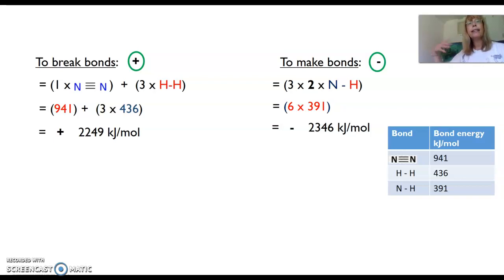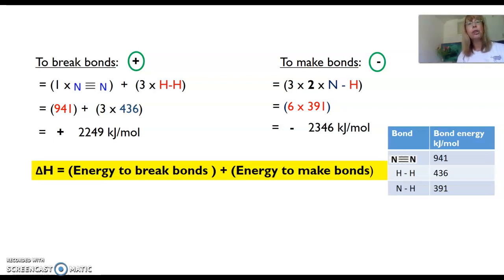Now we want to calculate the overall energy change. We use this formula. Have you written it in? Now we substitute in the numbers, remembering the signs, the positive and the negative. The overall energy change is minus 97 kilojoules per mole. Have you put in the negative?